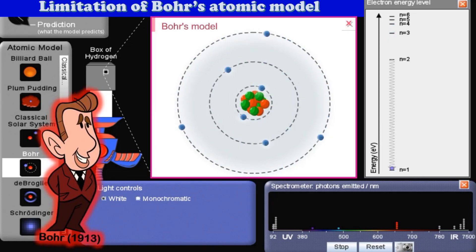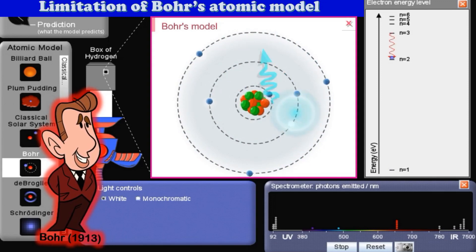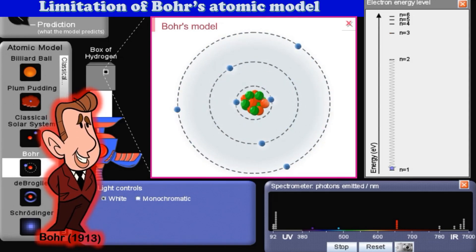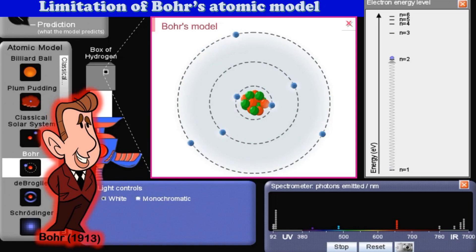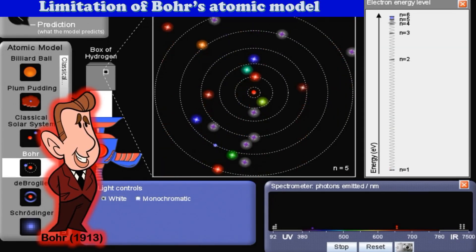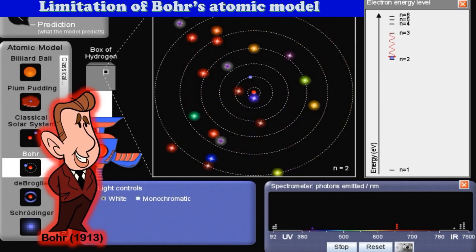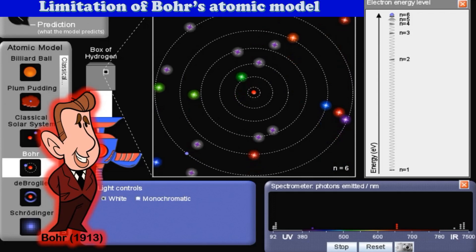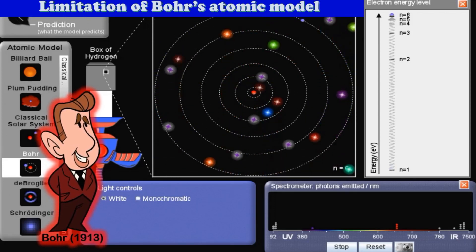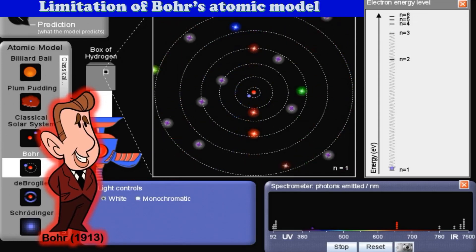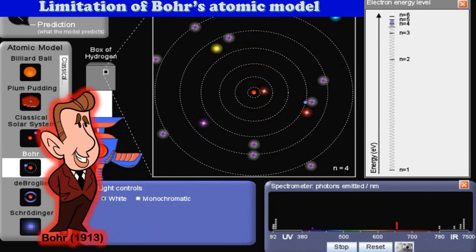Bohr's atomic model was the first step in understanding how the atom is built and it gave insight into the nature of the line spectra emitted by gases. At the time, the riddle of atomic structure seemed to be solved. Bohr was successful in introducing the idea of quantum energy, and in explaining the lines of the hydrogen spectrum. However, his theory could not be extended to predict the energy levels and spectra of atoms and ions with more than one electron.